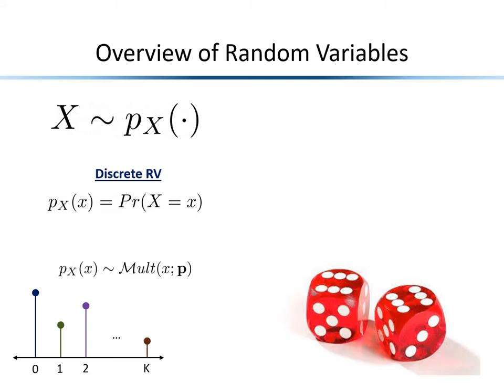A generalization of the Bernoulli is called a multinomial distribution, where we can observe one of K possible values depending on the underlying characteristics of our data. Conceptually, we can think of rolling a dice — one of six possible outcomes, leading to six entries for our multinomial. If we roll two dice together, there are 36 possible outcomes, so K would be 36.